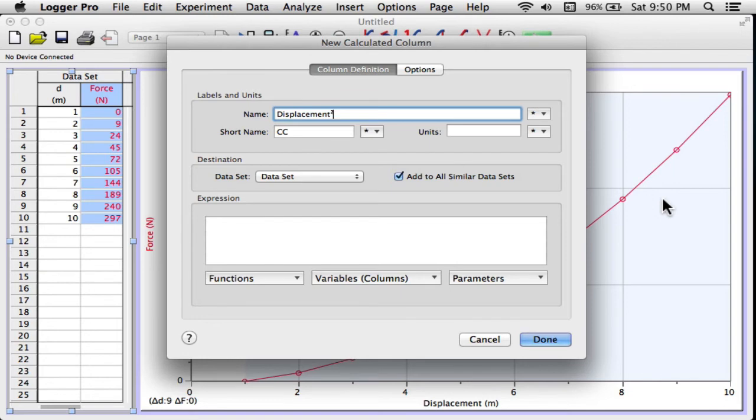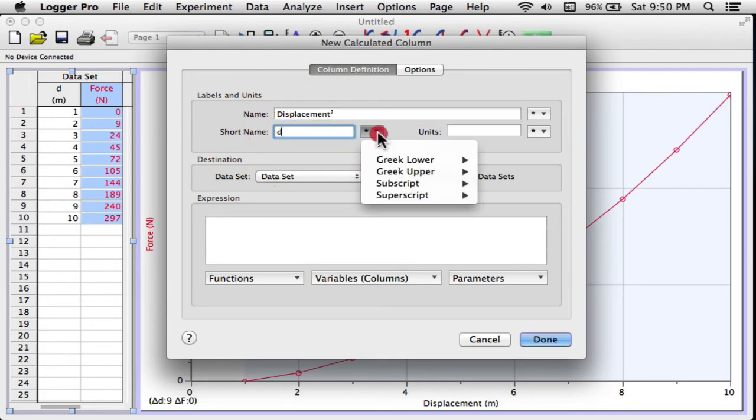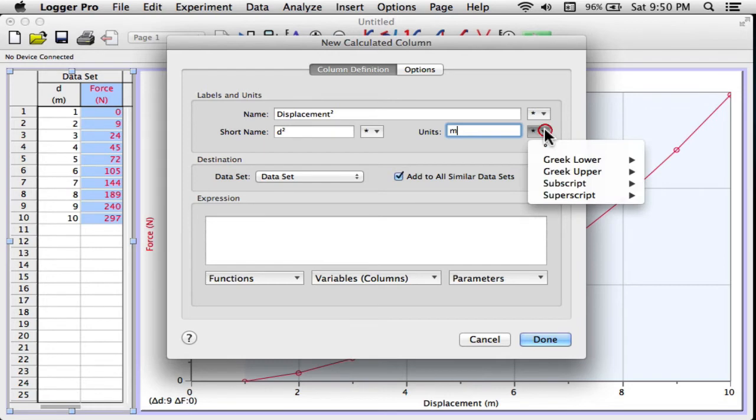I'm going to go to superscript and go down to 2. If I was square rooting, I would raise this to the half power. And now short name, I'll call it d squared, units, meters squared, and click.